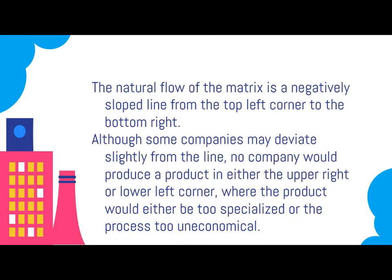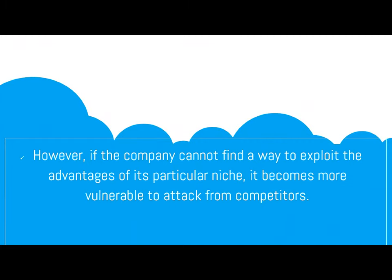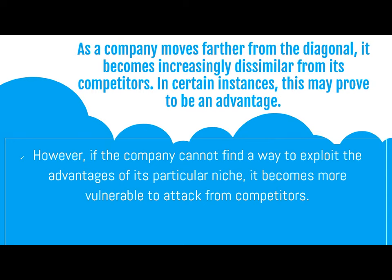A company or business unit in the lower right-hand corner would most likely produce a commodity where the production process is continuous, capital-intensive, and inflexible. The natural flow of the matrix is a negatively sloped line from the top left corner to the bottom right. Although some companies may deviate slightly from the line, no company would produce a product in the upper right or lower left corner, where the product would be too specialized or the process too uneconomical. However, if the company cannot find a way to exploit the advantages of its particular niche, it becomes more vulnerable to attack from competitors. As the company moves farther from the diagonal, it becomes increasingly dissimilar from its competitors, which in certain instances may prove to be an advantage.